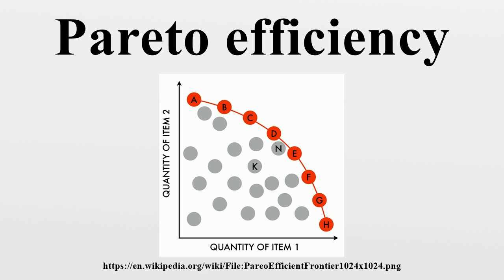Under certain idealized conditions, it can be shown that a system of free markets will lead to a Pareto efficient outcome. This is called the first welfare theorem, first demonstrated mathematically by economists Kenneth Arrow and Gerard Debreu. However, the result only holds under the restrictive assumptions necessary for the proof. In the absence of perfect information or complete markets, outcomes will generically be Pareto inefficient, per the Greenwald-Stiglitz theorem.